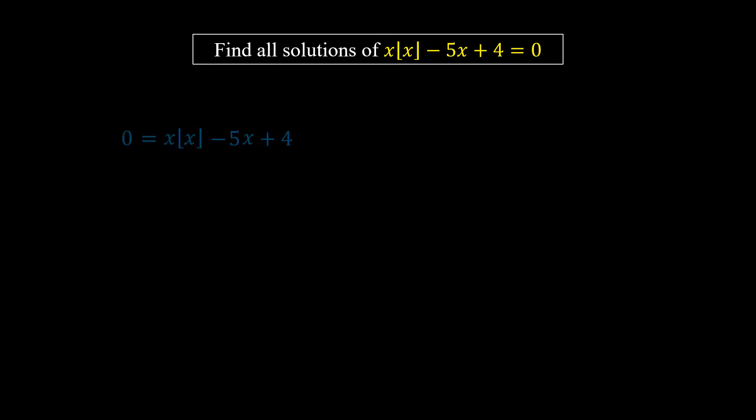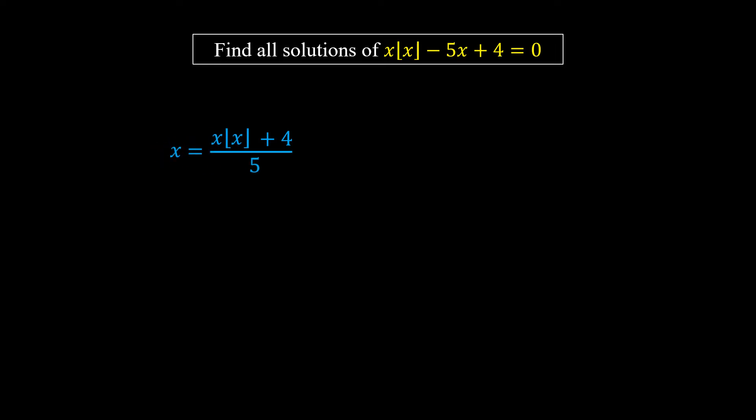The first form of x can be obtained by moving minus 5x to the left and then dividing by 5, so we have the first form of x.